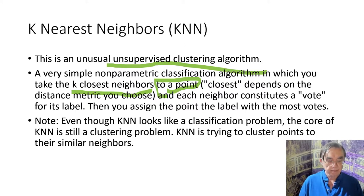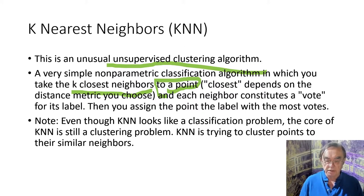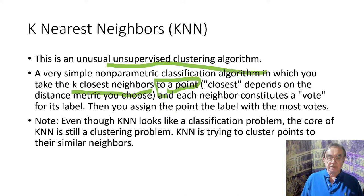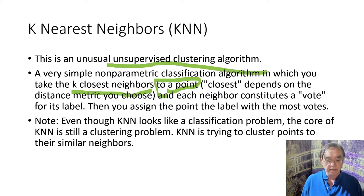Then you use some measure — either count the number of neighbors among those k which have some classification, like yes or no, and choose the classification which the majority of neighbors have.